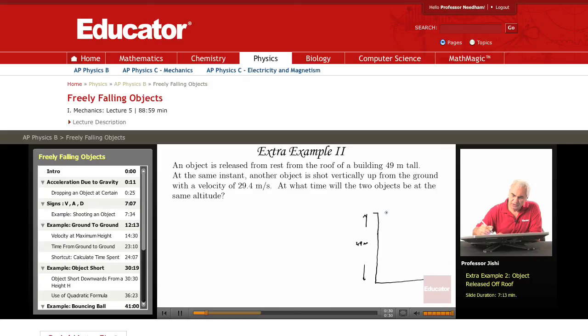The object is released from rest. So, V0 equals 0 here. At the same instant, another object is shot vertically up from the ground with a velocity of 29.4 meters per second. At what time will the two objects be at the same altitude?